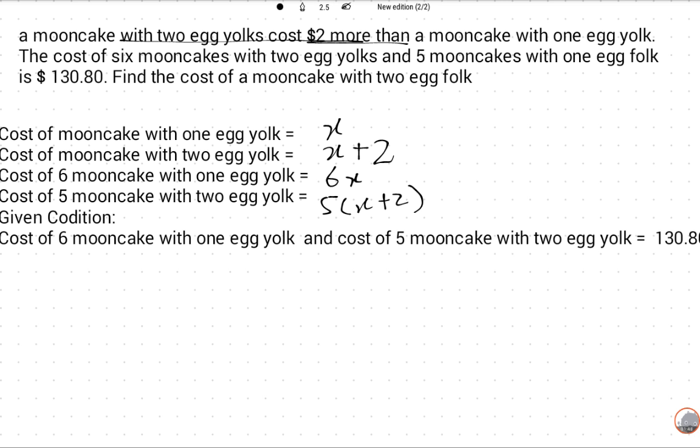Given condition: cost of six mooncakes with one egg yolk and cost of five mooncakes with two egg yolks, the total price is $130.80.